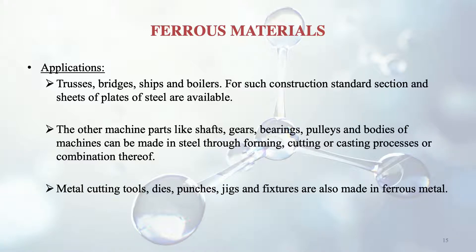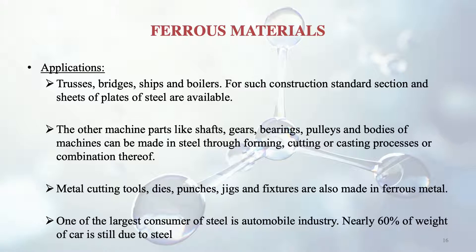Metal cutting tools, dies, punches, jigs and fixtures are also made of ferrous metal — generally of high carbon steel, because it is a very strong material suitable for cutting. One of the largest consumers of steel is the automobile industry. Although carbon composites and other fibres are coming in to replace steel, nearly 60% of the weight of a car is still steel.